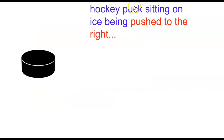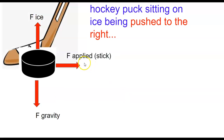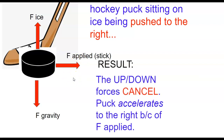Now let's consider the hockey puck sitting on the ice being pushed to the right. Well we still have the force of gravity down, we still have the force of the ice up, and we have the force applied from the stick, the player's skate, the player's hand — whatever is pushing the puck forward. What is the result of these forces? Well the up-down forces still cancel, but now the puck accelerates to the right because of the applied force.